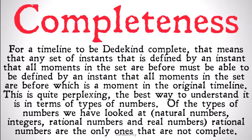The best way to understand this is in terms of types of numbers. Of the types of numbers we've looked at — natural numbers, integers, rational numbers, and real numbers — rational numbers are the only ones that are not complete.